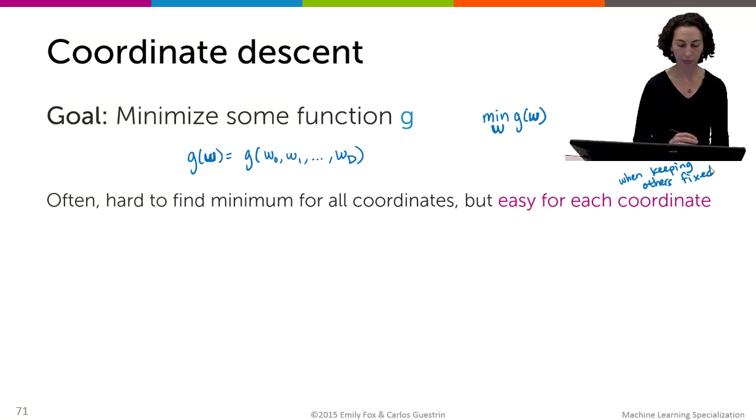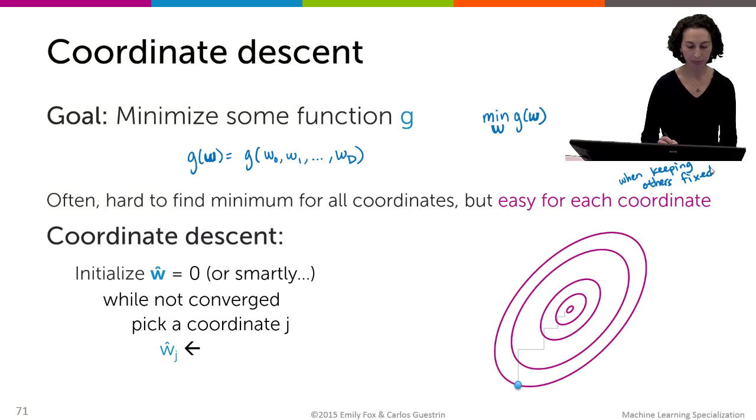And so that's the motivation behind coordinate descent. The coordinate descent algorithm is really intuitive. We're just going to start by initializing our w vector, which we'll denote w hat equal to 0, or you could use some smarter initialization if you have it.